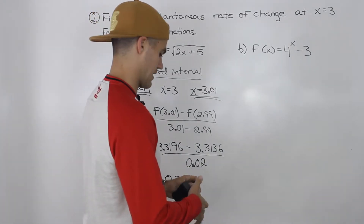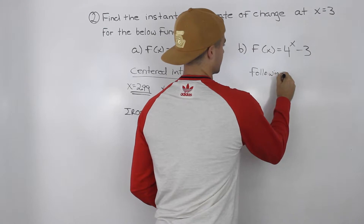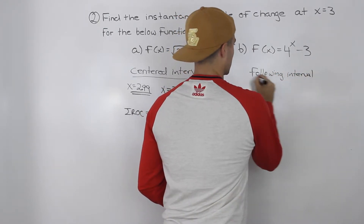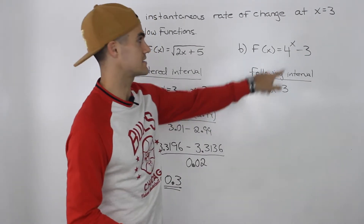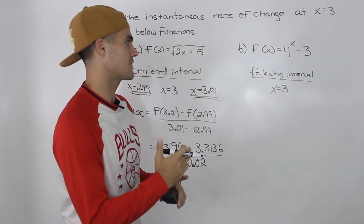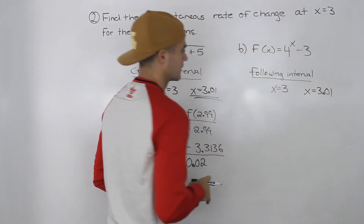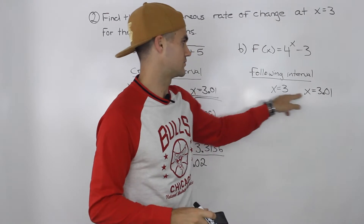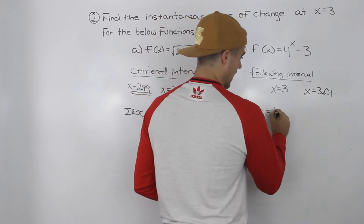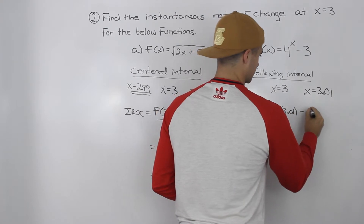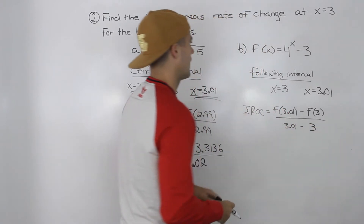Okay, let's move on to part b. For part b, let's use the following interval method. The following interval takes the x value at which you are finding the instantaneous rate of change — in this case x equals 3 — and then picks an x value very close to the right of it, so let's use 3.01 again. Now you find the average rate of change between these two. So the approximate instantaneous rate of change would be f(3.01) minus f(3) all over 3.01 minus 3, for this function.